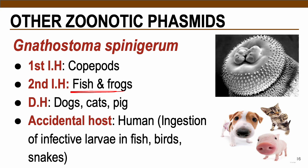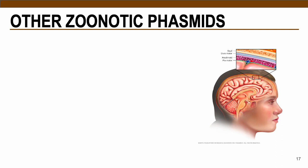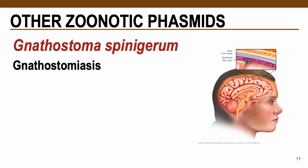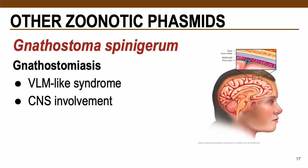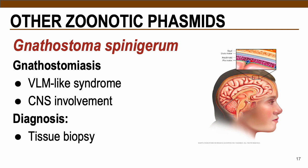Drinking of contaminated water may also predispose us to infection with this parasite. In terms of pathology, Gnathostoma spinigerum causes gnathostomiasis — a VLM-like syndrome where larvae travel to the brain area, causing CNS involvement, specifically neurological deficits. The only diagnosis for this parasite is through tissue biopsy.